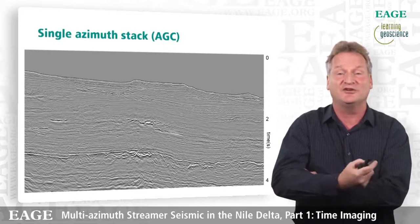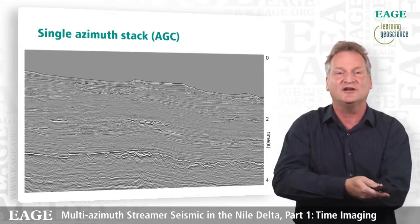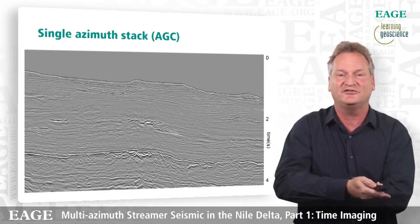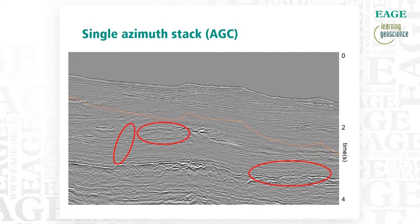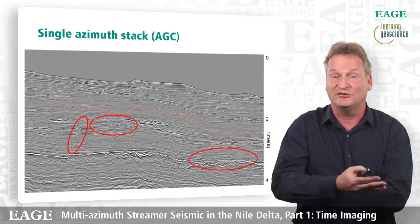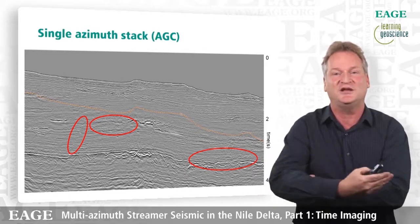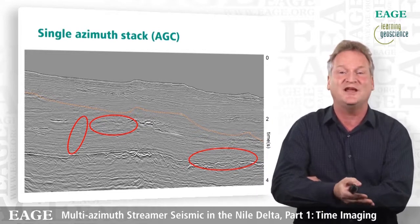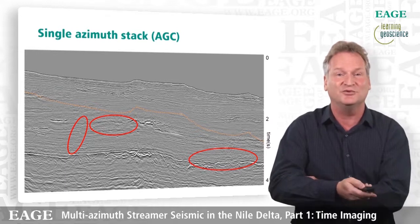Looking at the final result in the shallow section — zero to four seconds — you can see the very strong Messinian layer quite close to the sea bottom. This is a single-azimuth stack. You can see channel systems up shallow as well, and in itself it's quite a good image. The dashed orange line indicates where the water bottom multiple would come in — you can see the SRME was very effective in removing it. But you can also see the haze of noise from diffracted multiples that we haven't been able to remove yet.